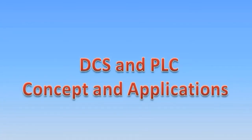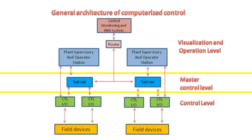Welcome all, this is Saoud. The distributed control system works based on distribution of the control processing around nodes in the system. It is a computerized control system with a large number of control loops which can be executed in the local controllers or at the field by the field bus devices. This system has the ability for remote monitoring and supervision.